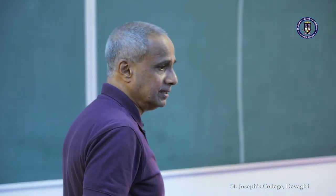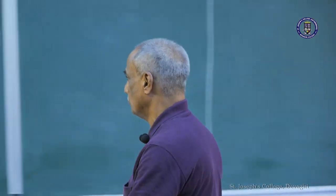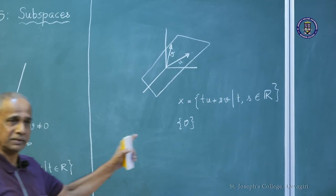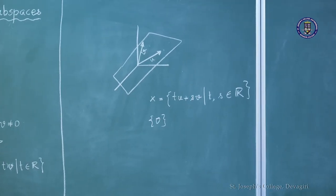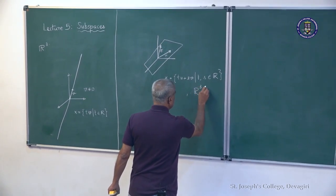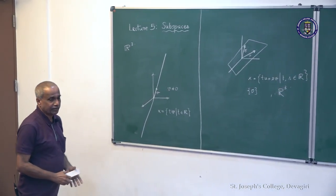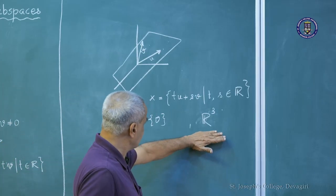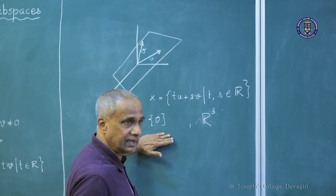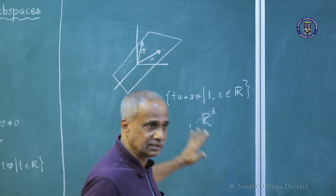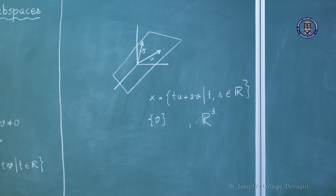Trivially, the zero vector alone is also a vector space, and of course the whole space R³ is a subspace of itself. So there are four distinct types of subspaces in R³: the whole space, the zero vector, all planes through the origin, and all lines through the origin.